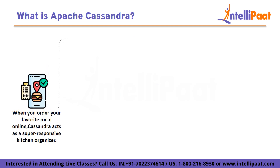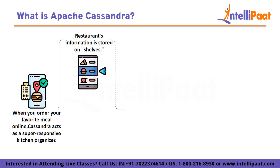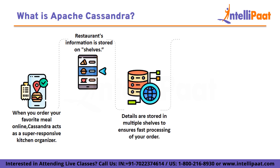Imagine when you order your favorite meal online — Cassandra acts like a super responsive kitchen organizer. Each restaurant's details like the dishes, prices, and delivery schedule are stored in different shelves. If one shelf is crowded, other shelves step in, making sure your order is processed quickly.